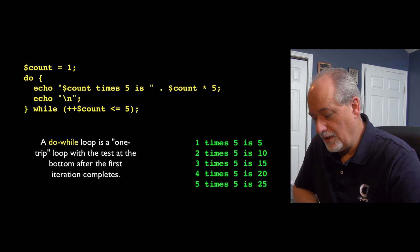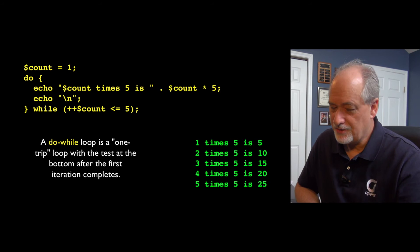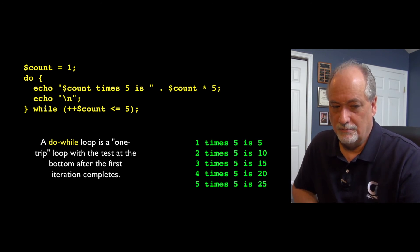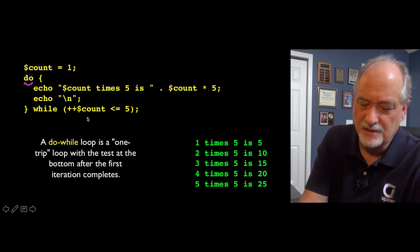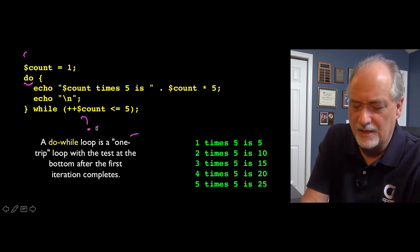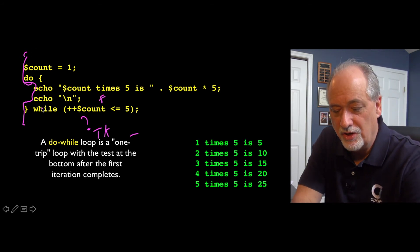There is in PHP a one trip loop, it's rarely used. I don't think I've written a do while loop, and I'm not sure I can recall when I used one of these things. The difference is it's got a do at the top, and it's got the test at the bottom, and so it's a one trip loop, which means it doesn't check the question that's down here at the bottom until it has made it through the loop once. So even if this is false the first time through, it has executed the loop before it even knows that it's false.